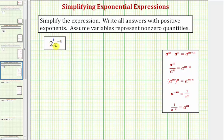So to write this using only positive exponents, we'll use the exponent rule here where we have a raised to the power of negative m equals one over a raised to the power of positive m.